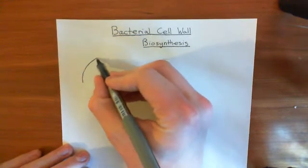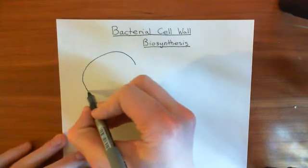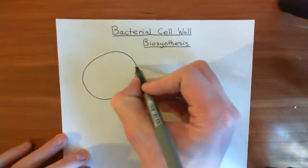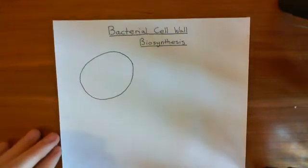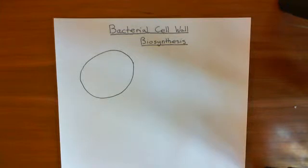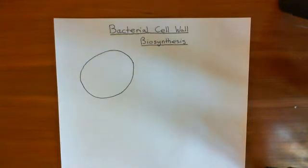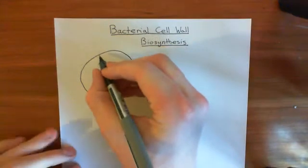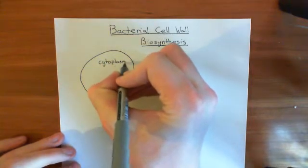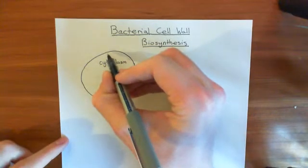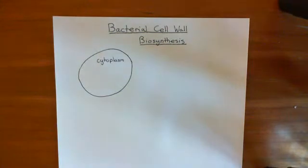So, the first thing you have to do — if you have a bacterial cell — is you have to make the components out of which the cell wall is actually made. A few antibiotics work by stopping you from making those components. This synthesis occurs in the cytoplasm of the cell, and we're going to assemble the components on the inner leaflet of the phospholipid bilayer — initially synthesised in the cytoplasm, and then docked on the inner leaflet.